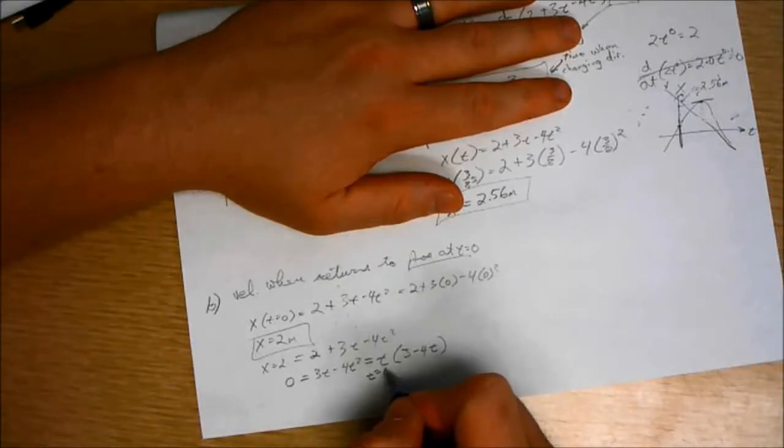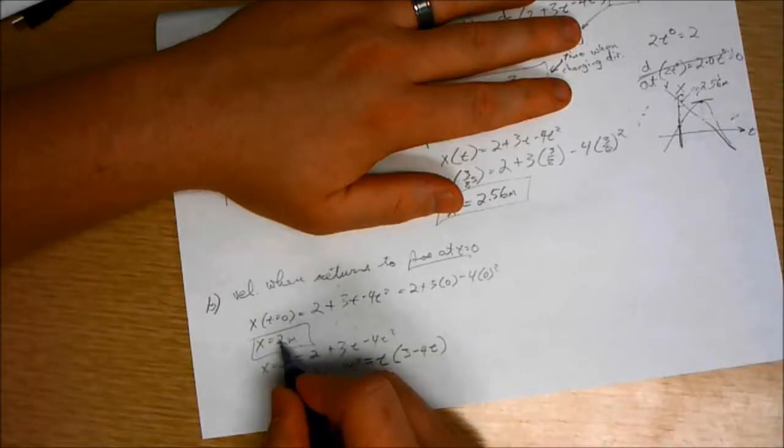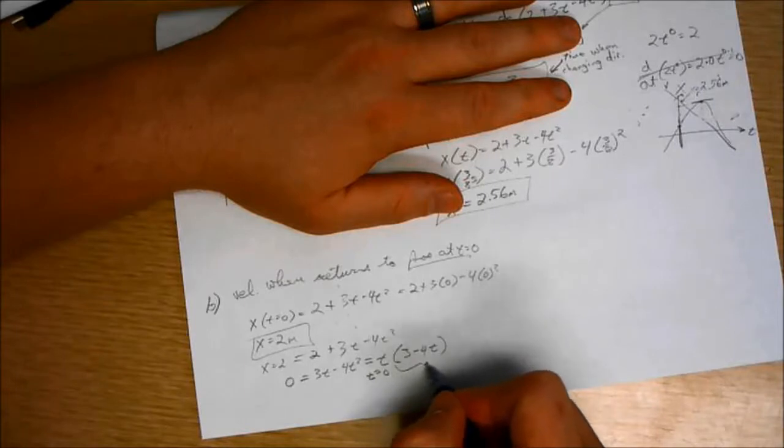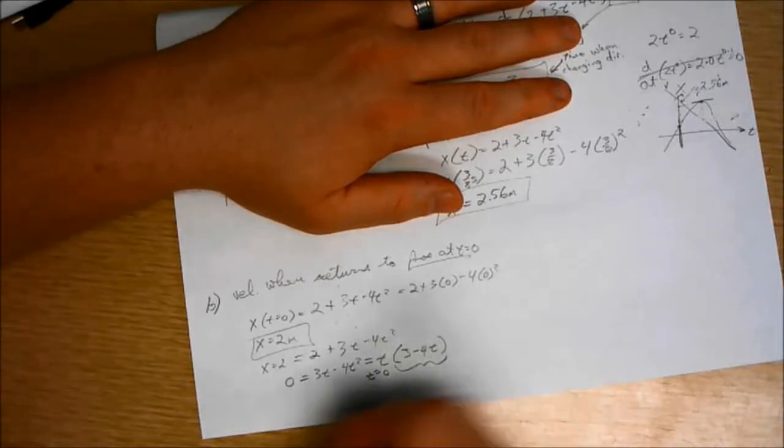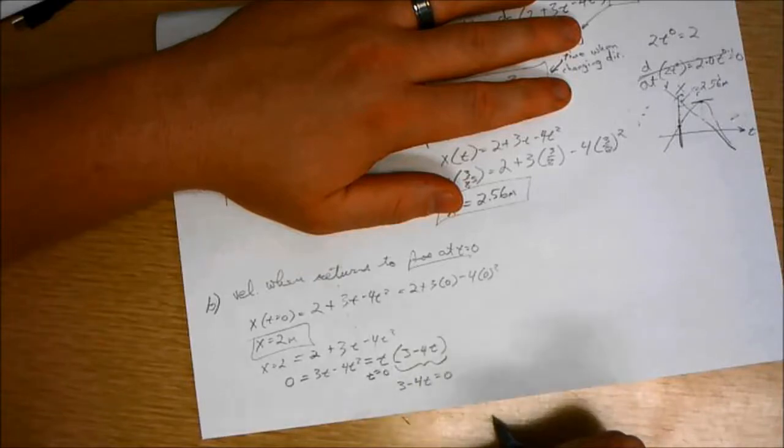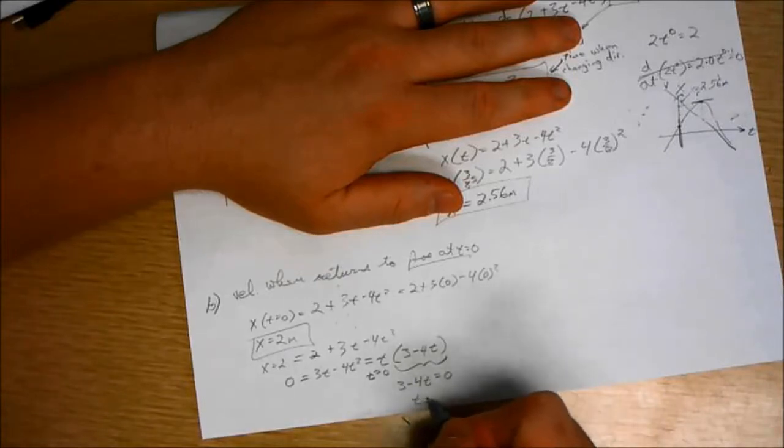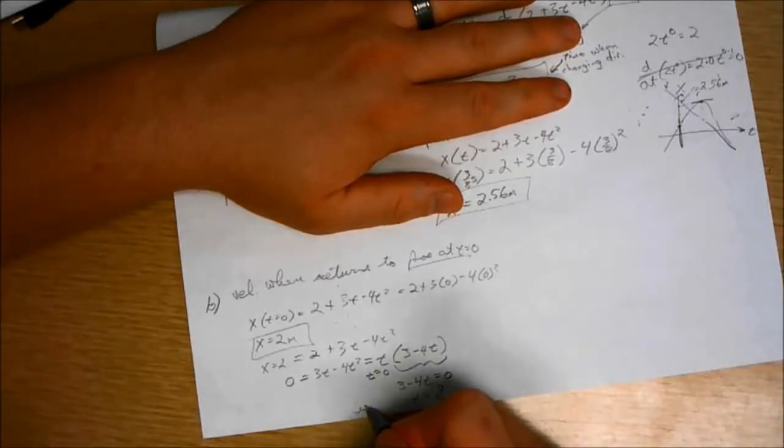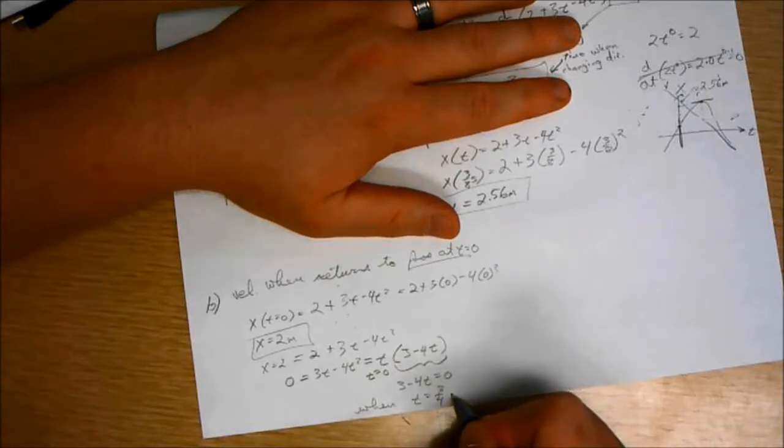One when t equals 0, obviously, because we just found that at t equals 0, x equals 2 meters. But also, this equation is also satisfied when 3 minus 4t equals 0, or t equals 3 fourths. So when t equals 3 fourths, x equals 2.